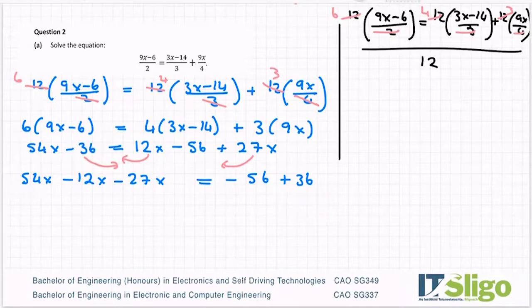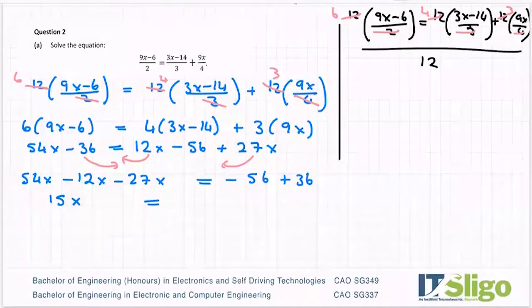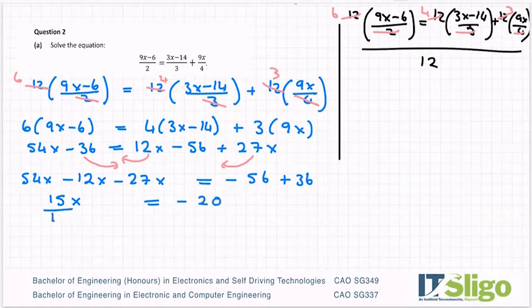So I put these numbers into the calculator, 54 minus 12 minus 27, and I got 15. So I have 15x's on that side, and I have minus 56 plus 36 on that side, and it's minus 20. Divide by the number in front of x, and I get x is equal to minus 4 over 3.